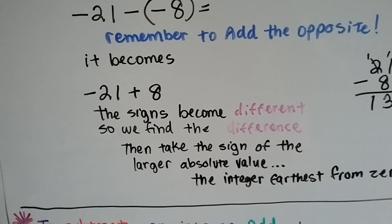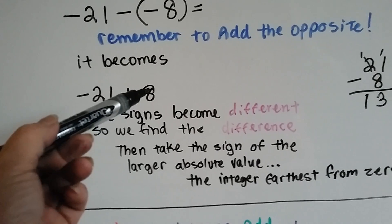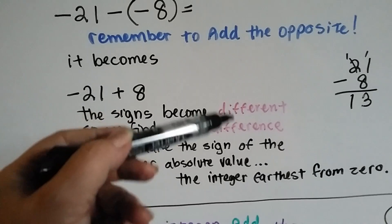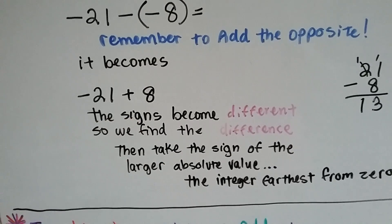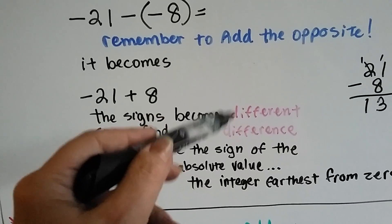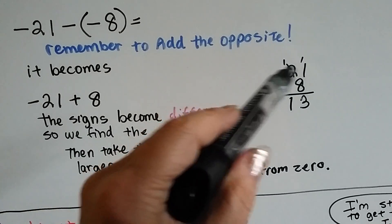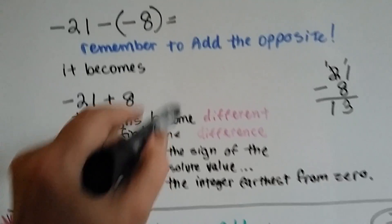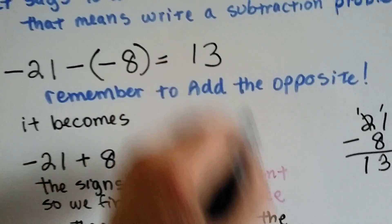And what do we do when the signs are different? We've got a negative 21 and a positive 8 now. We find the difference because the signs are different. And 21 take away 8 is 13. So we know it's a 13, but what sign do we use?